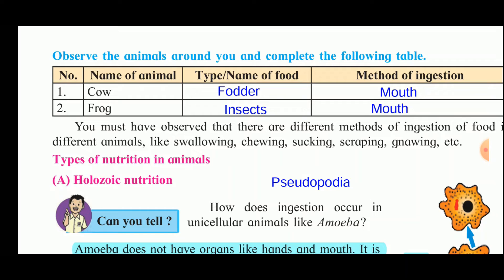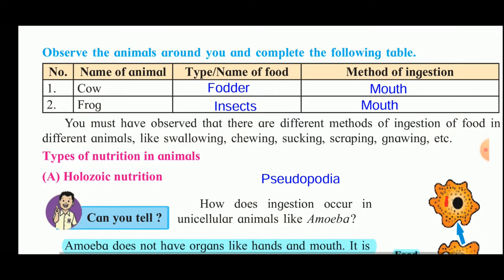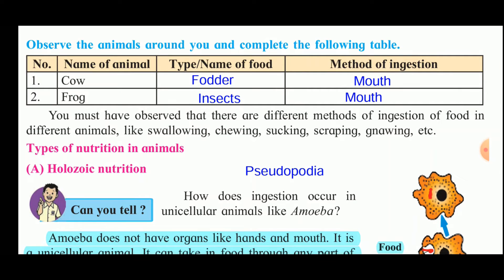Now observe the animals around you and complete the following table. The columns are: name of the animal, type or name of the food, and method of ingestion. For example, a cow feeds on fodder and the method of ingestion is through the mouth. A frog's food is insects and the method of ingestion is through the mouth. You must have observed that there are different methods of ingestion in different animals.